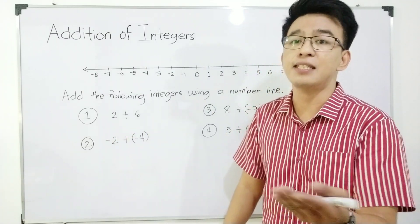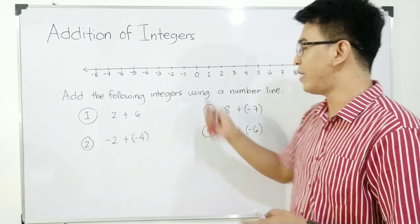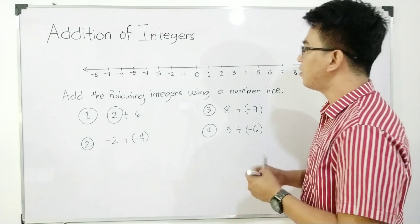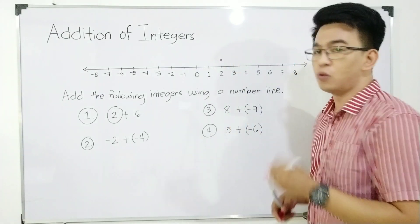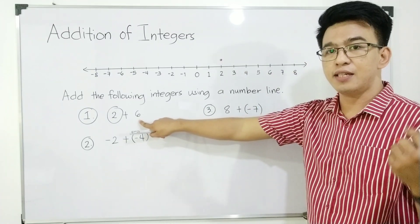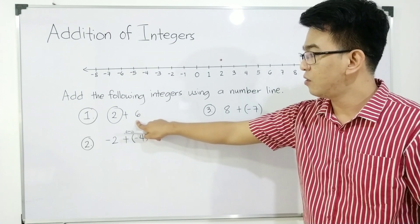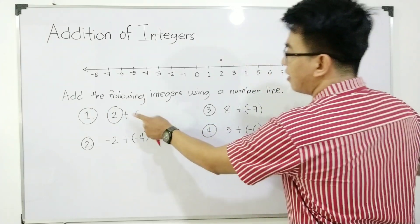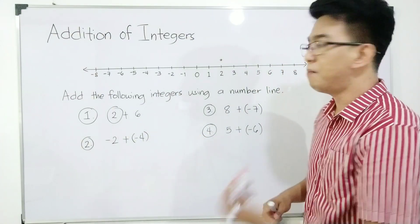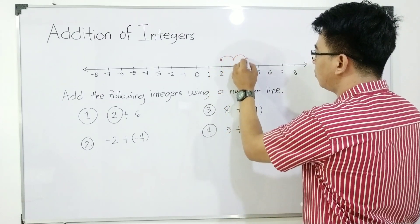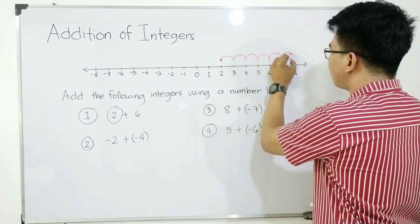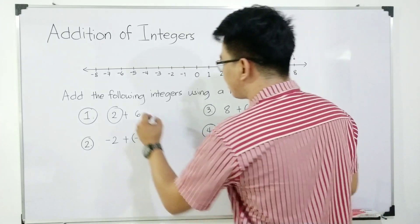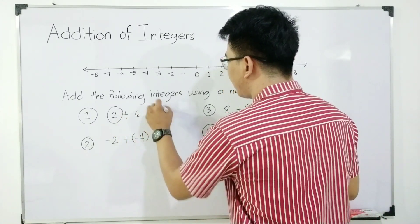What is the answer? Basically, alam mo na yan — that is 8. But let us use the number line that we have here. I will focus on the first number, which is 2, and dun mag-start. This is my starting point: 2. Plus 6 — since we will add 6 to 2, from 2 I will move 6 units going to the right, because this integer is positive. This is 1, 2, 3, 4, 5, and 6. As you can see, we stop at 8. Therefore, 2 plus 6 is equal to 8.